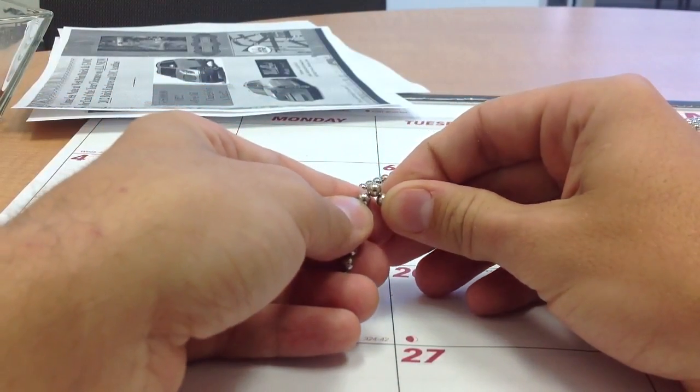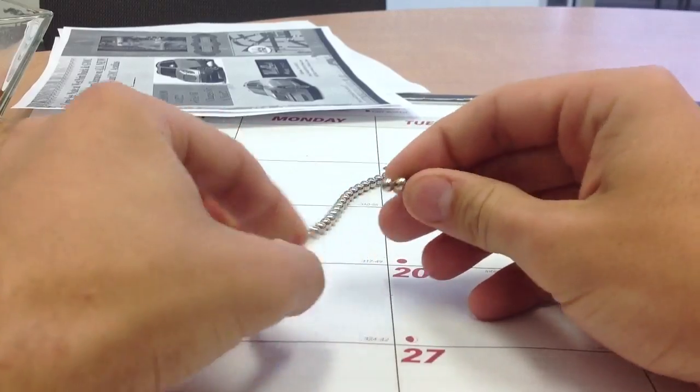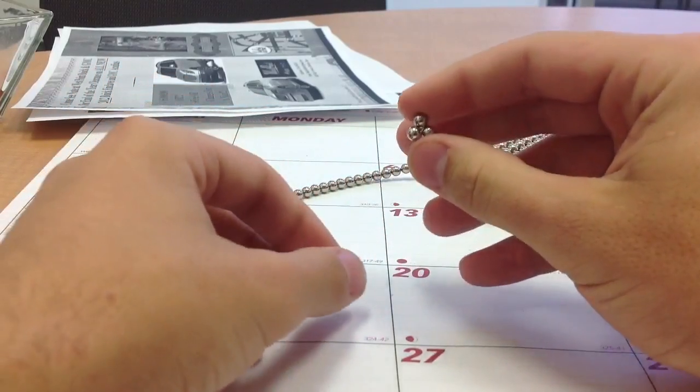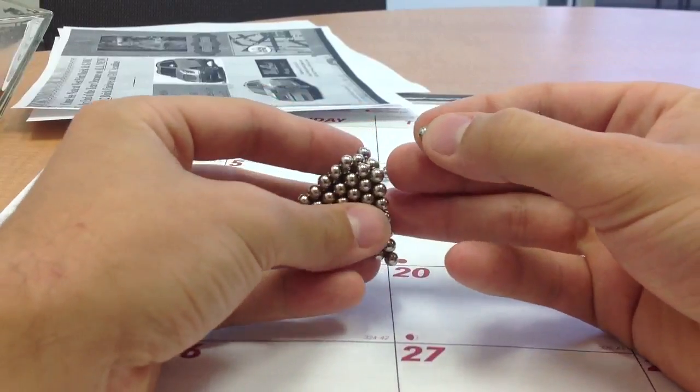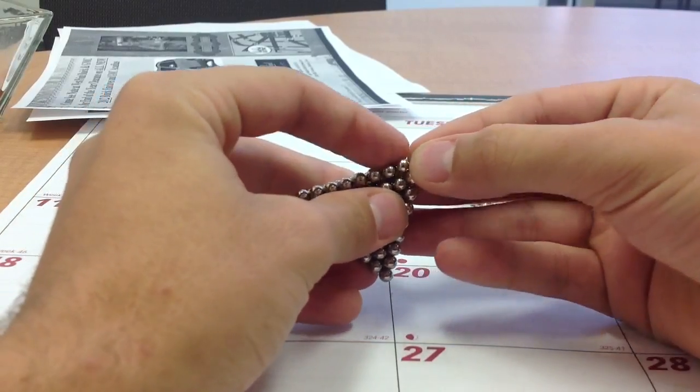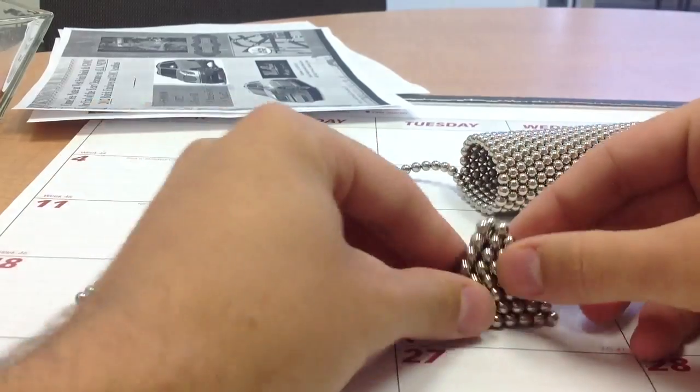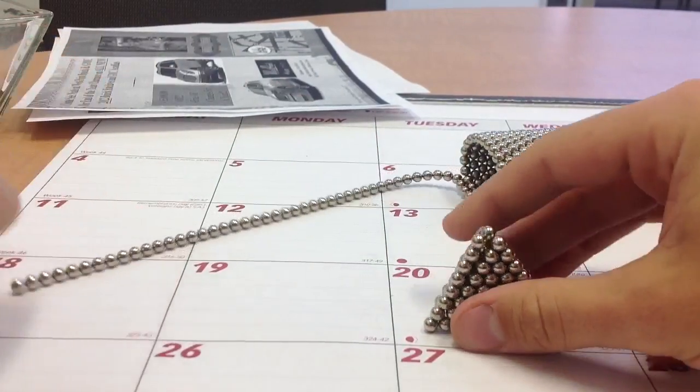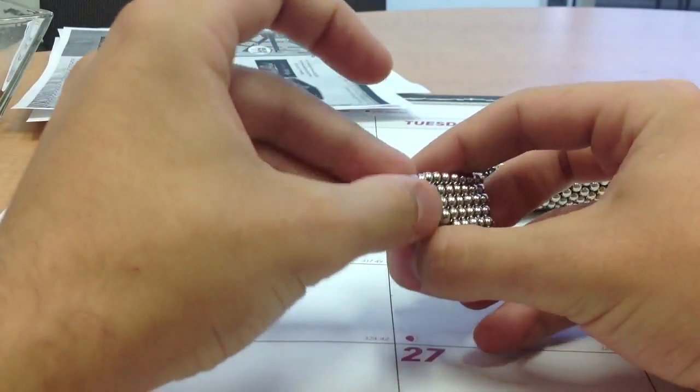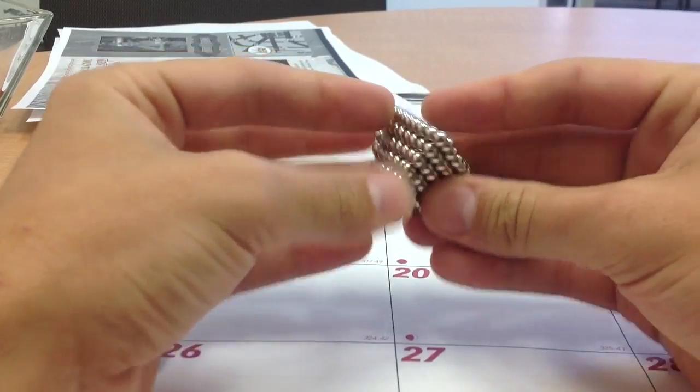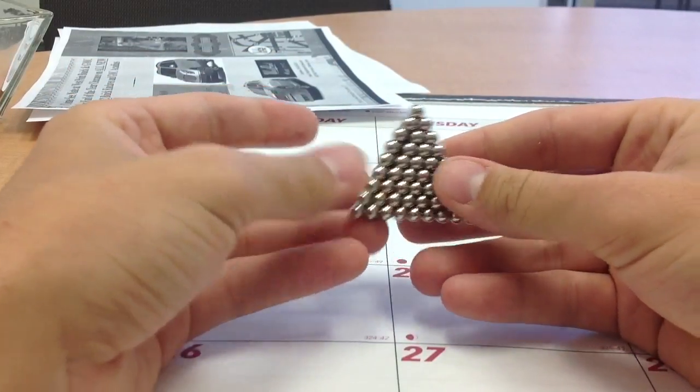You're going to take three and make a triangle like that. And then you're going to set it on top. And then you're going to take one and put it on top of that. And there you go. It's a pyramid.